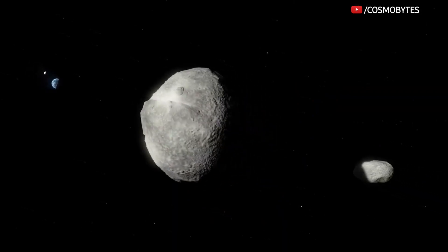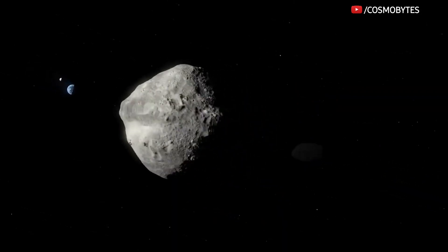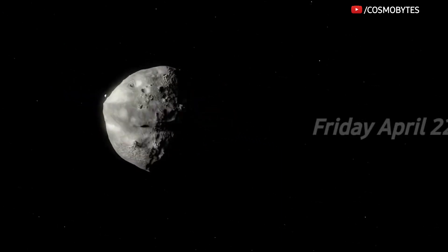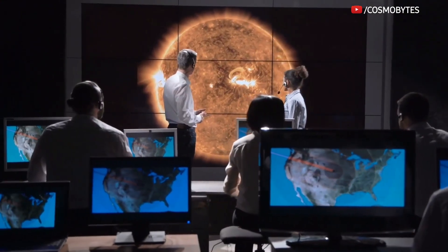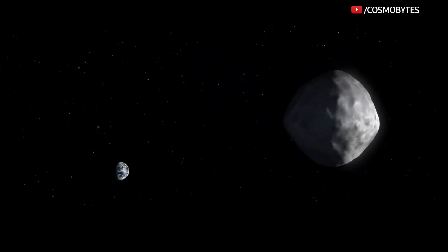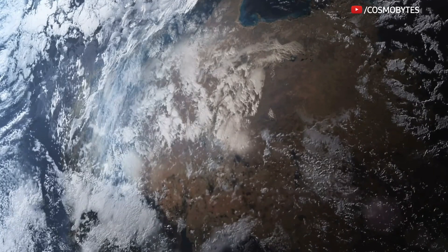Two dangerous-looking asteroids are now making their way towards Earth and will make their closest approach on Friday, April 22nd. The American Space Agency has classified the asteroids as potentially hazardous due to their size and proximity to our home planet.